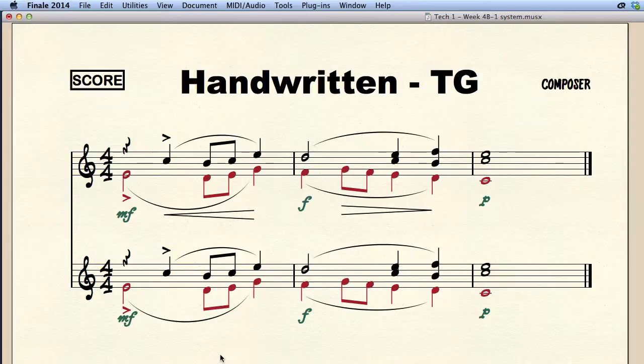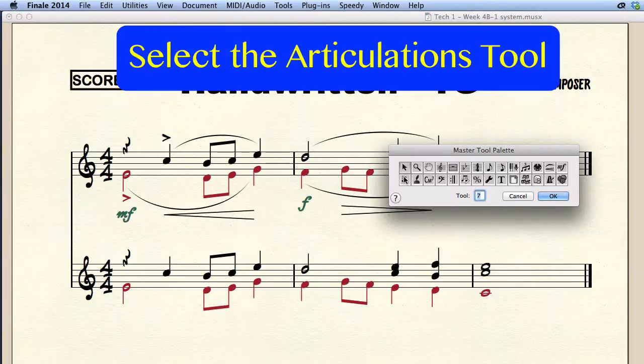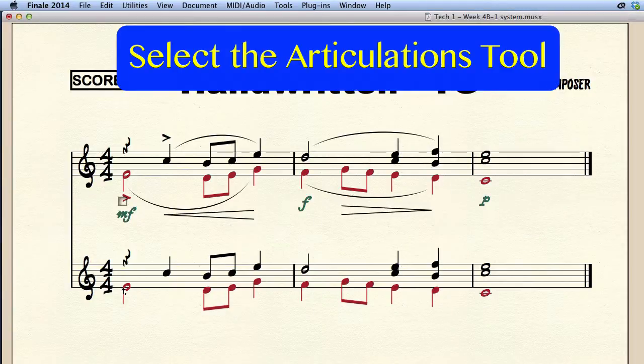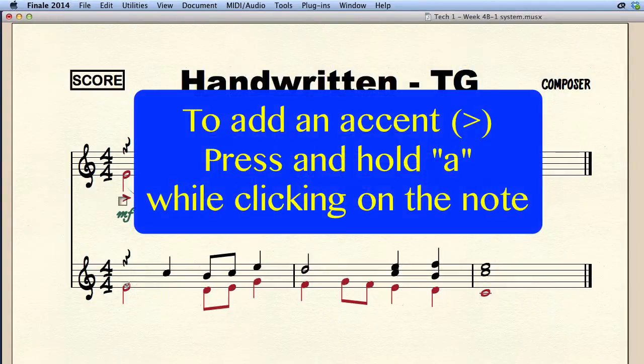Let's now enter the accents. If you want to add an accent to a note you got to make sure you work in the same layer the note is in. Since we're already in layer 2 let's switch to the articulations tool and add the accent to the E which is in layer 2. Hold the A key down and click the note.